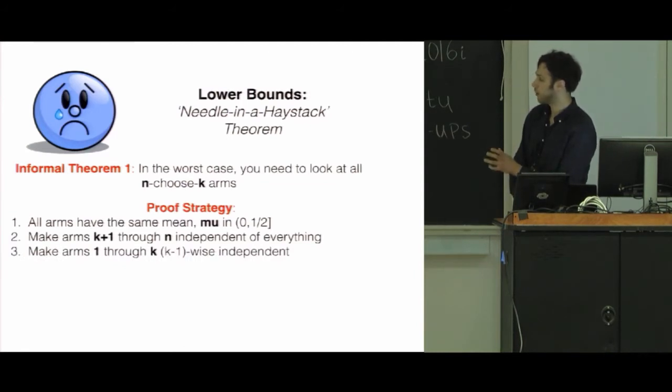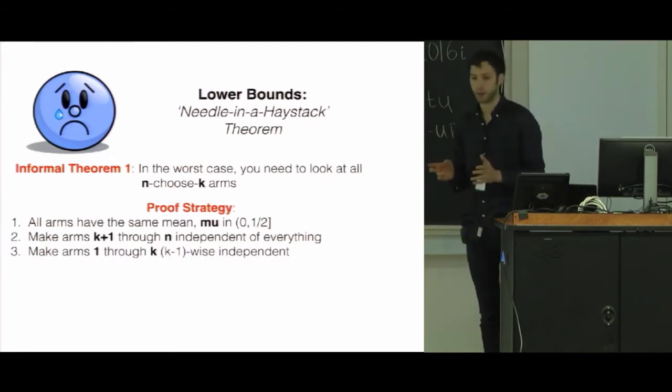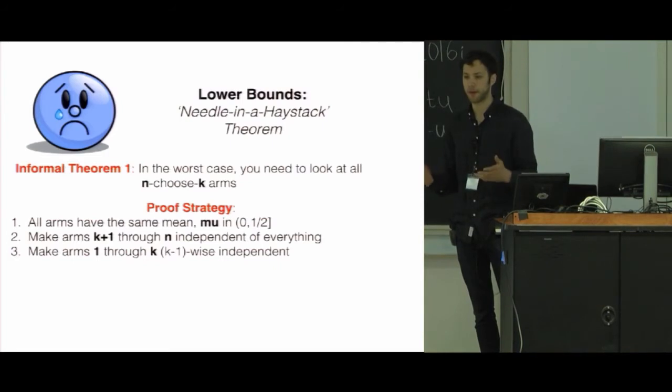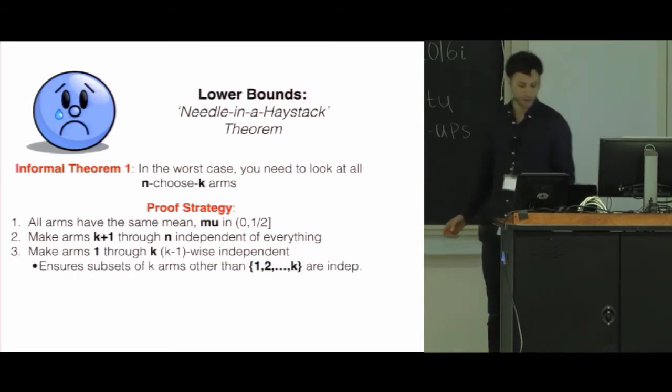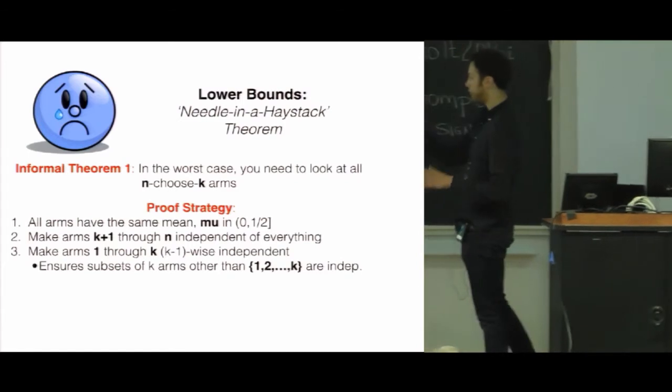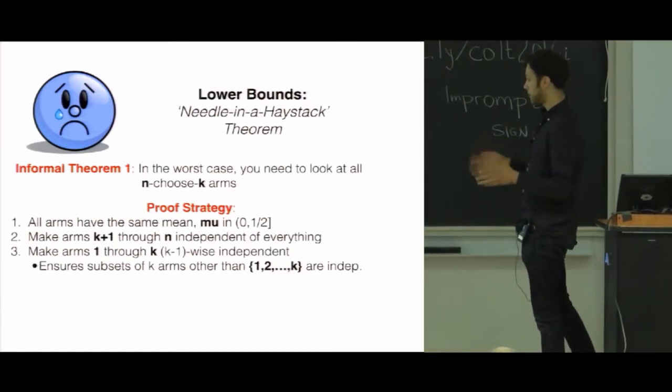Then you take the first k, 1 through k arms, and you make them k minus 1 wise independent. So every subset of size k minus 1 will be independent. And this implies that every subset of arms, other than arms 1 through k of size k, are going to be totally independent.